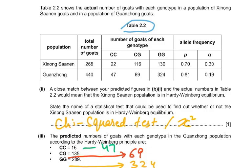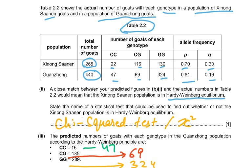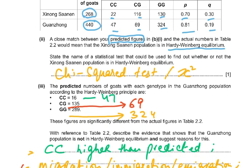Table 2.2 shows the actual number of goats with each genotype in a population of 268 and a population of 440. The allele frequency was given. A close match between predicted figures and actual numbers in table 2.2 would mean the population is in Hardy-Weinberg equilibrium. The question asks: state the statistical test used to find whether or not the population is in Hardy-Weinberg equilibrium. Whenever there are predicted and observed/expected figures, it is a chi-square test.